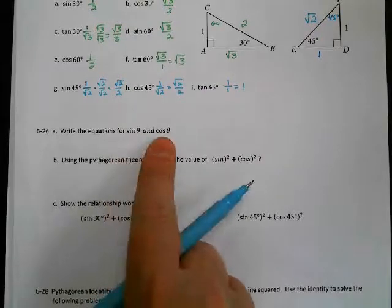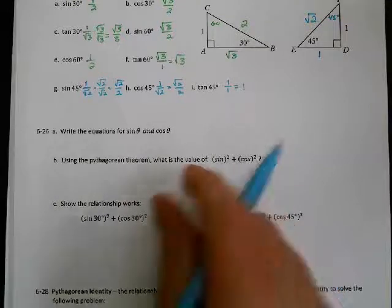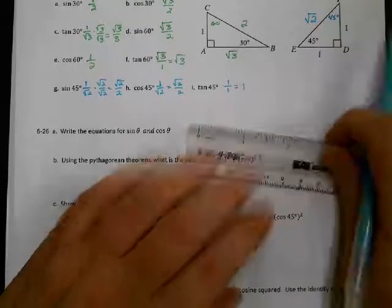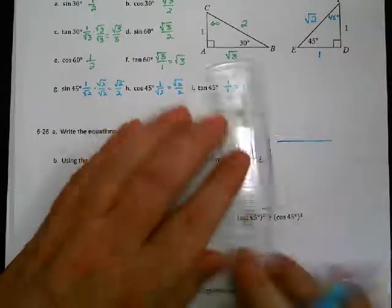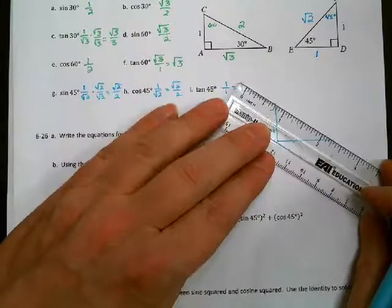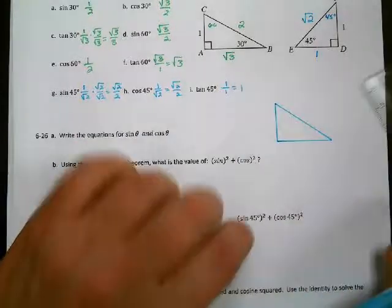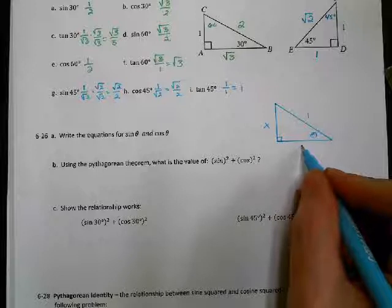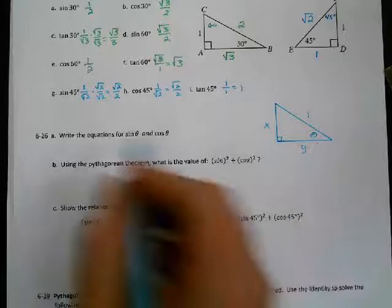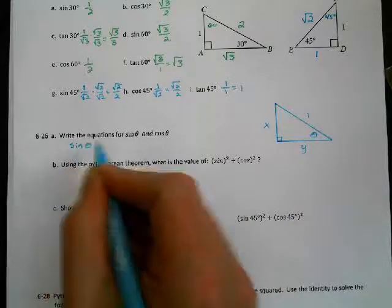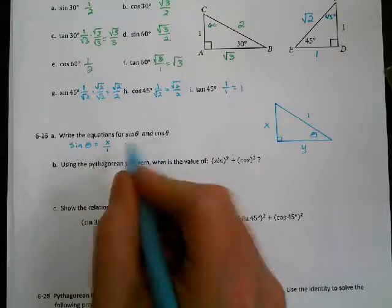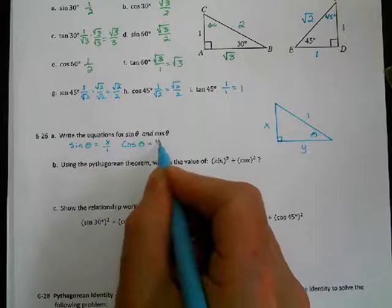Now we're going to write equations for the sine and cosine of theta. I realized I left off a picture, so let's draw it. We have theta as our angle, we'll make the hypotenuse 1, one leg x, and the other leg y. So the sine of theta would be x over 1, and the cosine of theta would be y over 1.